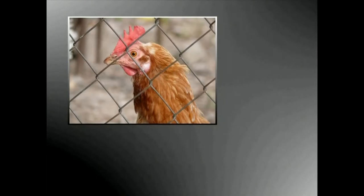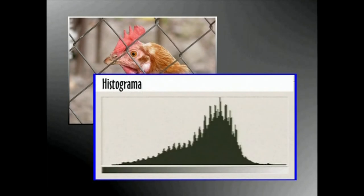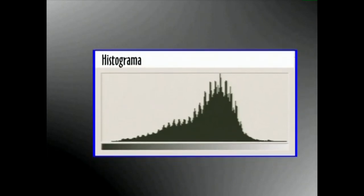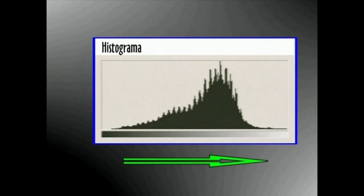Irudi baten tonuen aldaketak adierazten dituen grafikoari deritzo histograma. Grafiko horretan irudiaren koloreen tonu guztiak agertzen dira ehunekotan, itzalen tonuetatik argien tonuetara. Grafikoaren ardatz horizontala beltzetik zurira doan berreunda berrogeta amasei pausotan banatua dago. Eta ardatz bertikalean irudiaren pixel kopurua agertzen da.